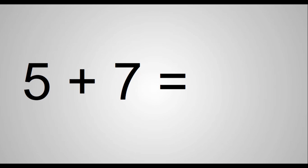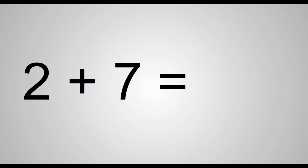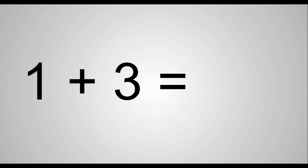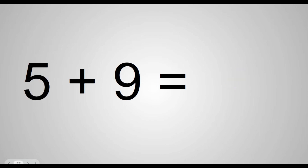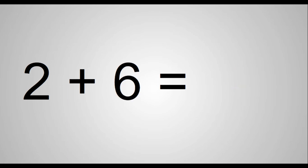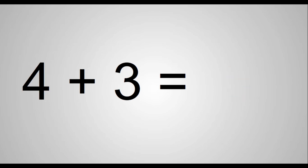Two plus seven equals nine. Two plus three equals five. One plus three equals four. Five plus nine equals fourteen. Five plus six equals eleven. Four plus three equals seven.